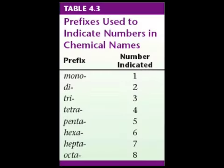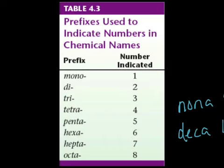So here are the prefixes that we need to worry about. Mono indicates 1, di is 2, tri is 3, tetra 4, penta 5, hexa 6, hepta 7, octa 8. The two that are not on there, if you want to add these to your notes also, nona is 9 and deca is 10. And these are probably very similar to the prefixes that you use maybe in your math class.